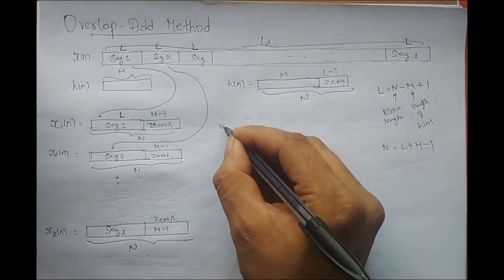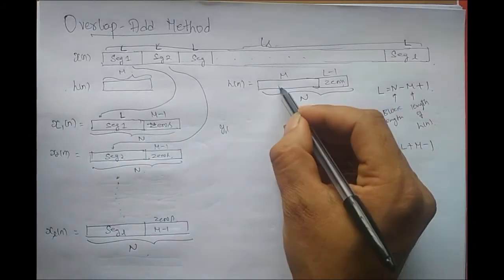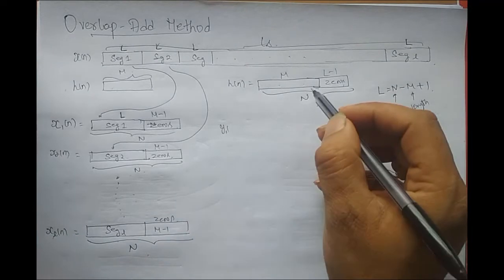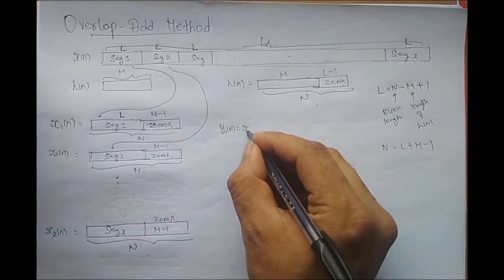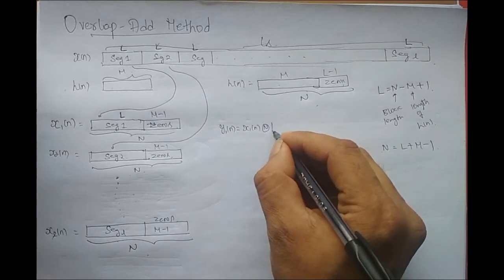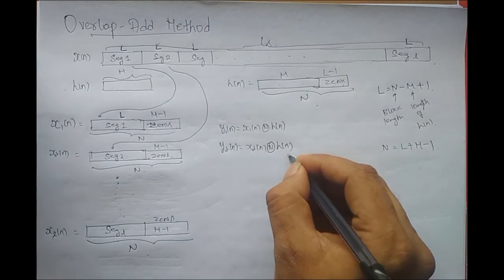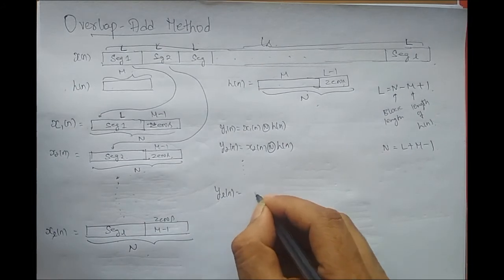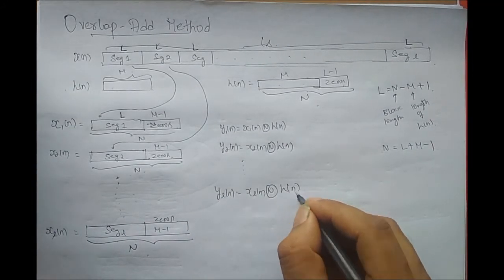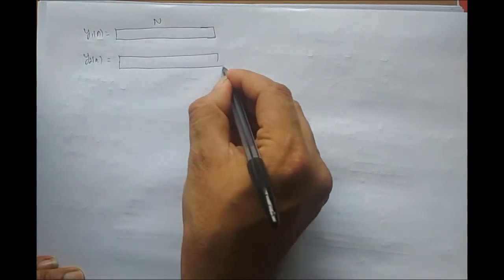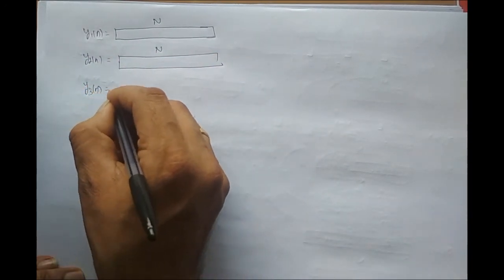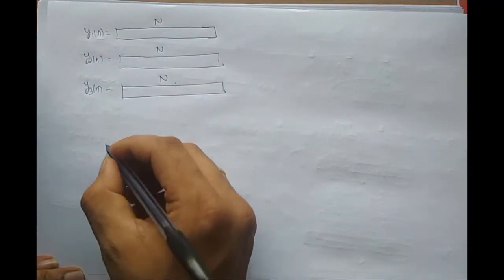After this, I perform circular convolution of each input block with the impulse response. Y1(n) is X1(n) circularly convolved with H(n). Y2(n) is X2(n) circularly convolved with H(n), and so on. YL(n) is XL(n) circularly convolved with H(n). Each output Y1(n), Y2(n), Y3(n), through YL(n) has length capital N, because it is the result of circular convolution.